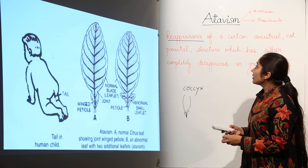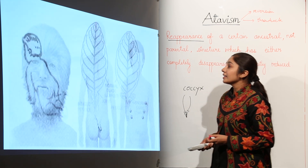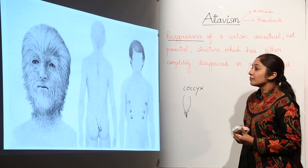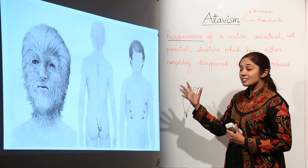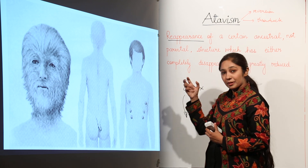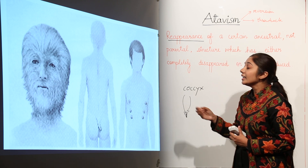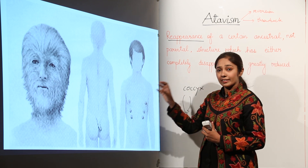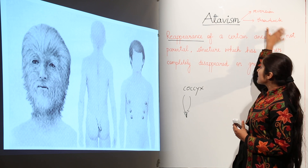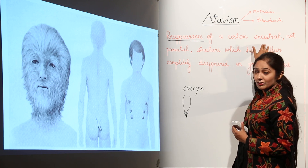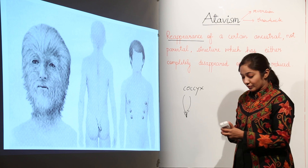Moving to other examples, some human beings have a lot of hair on their body, some have a tailbone, and some have extra mammae — two extra pairs of mammae on their body. The appearance of these characteristic traits, which are actually ancestral traits no longer present in most individuals, is an example of atavism.